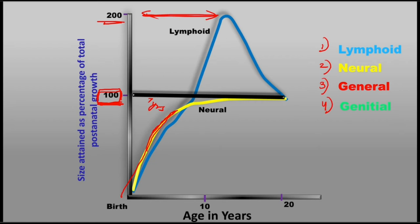There is a slight spur during adolescence, but broadly, children's brains are fully grown by the age of seven to eight years. That is the summary of neural tissue growth.